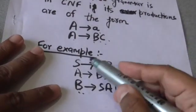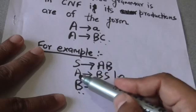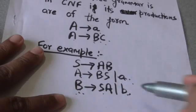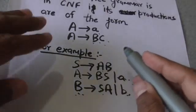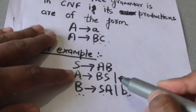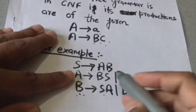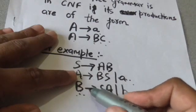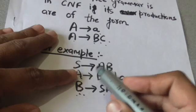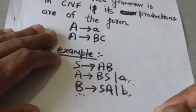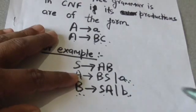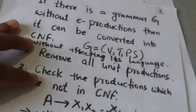For example, there is a grammar whose productions are: S derives AB, A derives BS or A derives a, B derives SA, and B derives b. In all these productions, the right-hand side has either a single terminal or only two variables. So this grammar is in Chomsky Normal Form.